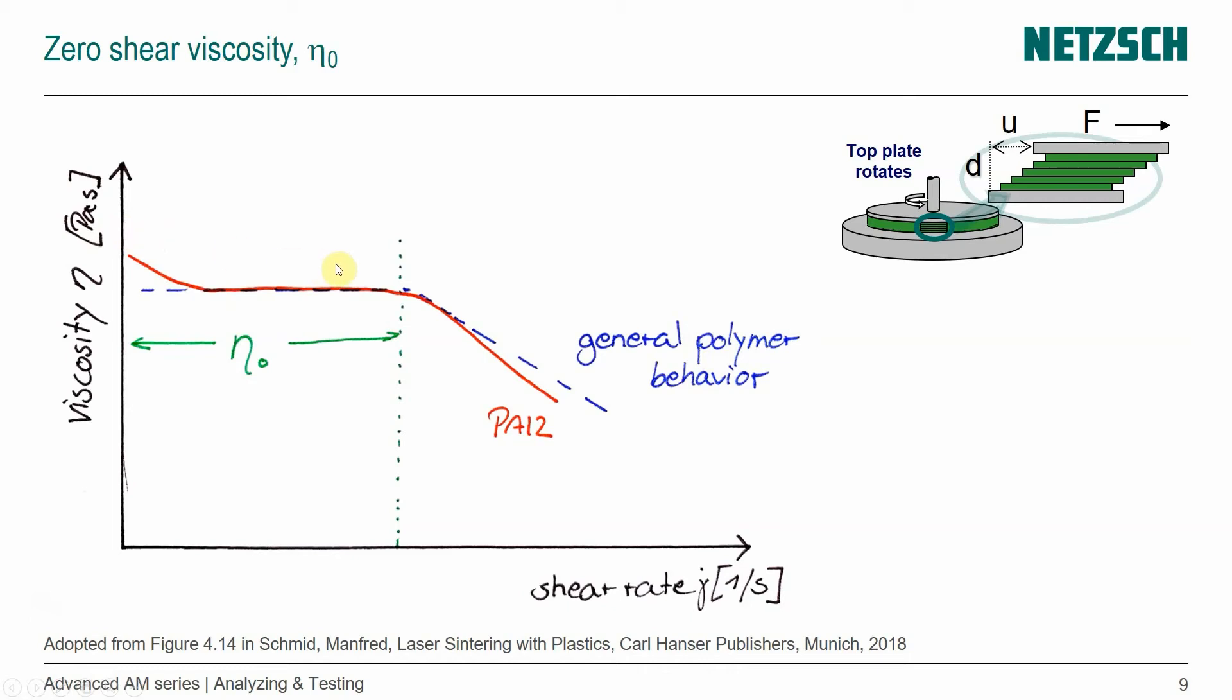Shear viscosity is important to understand how a certain material behaves at the temperature where it's melted and how it compares to other materials. And then when we want to look at crystallization behavior and modulus change, we go to the measurement in oscillation.